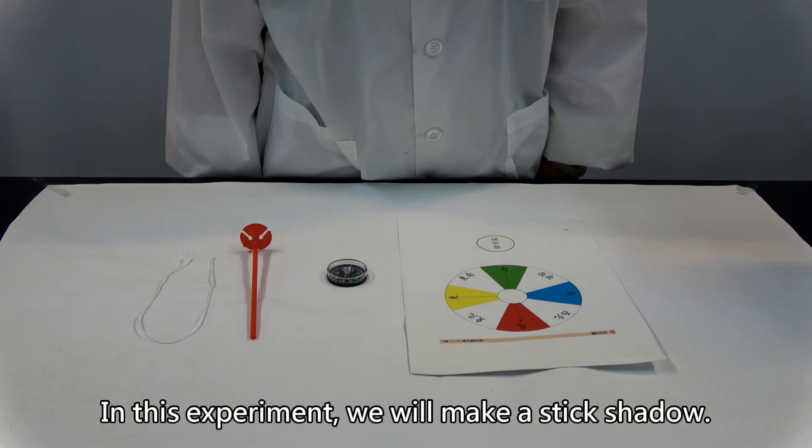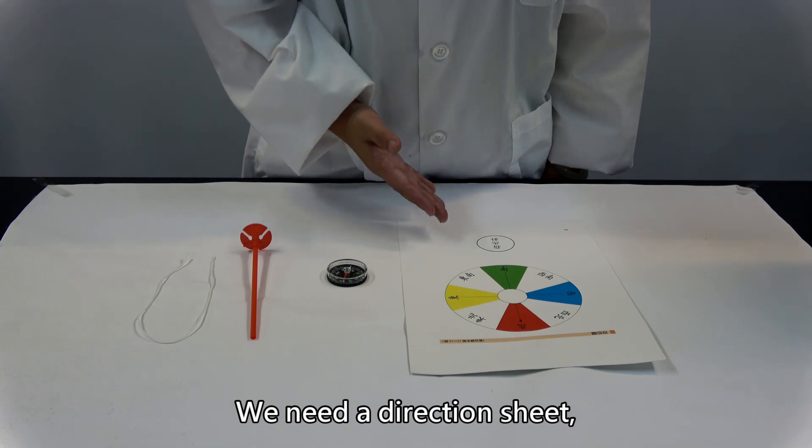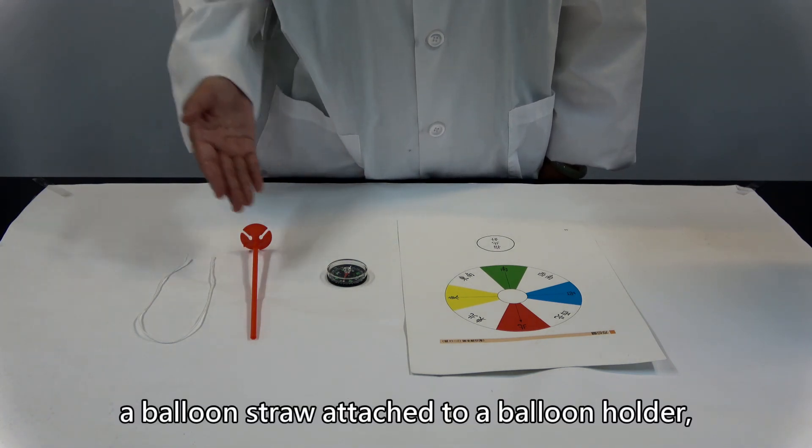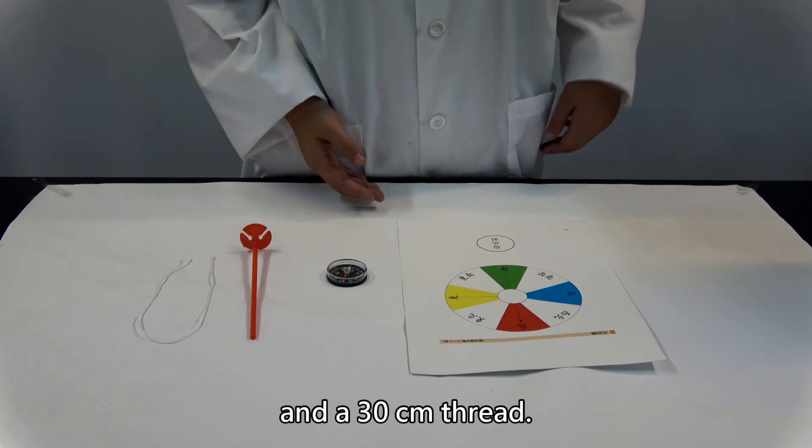In this experiment, we will make a stick shadow. We need a direction sheet, a compass, a balloon straw attached to a balloon holder, and a 30cm thread.